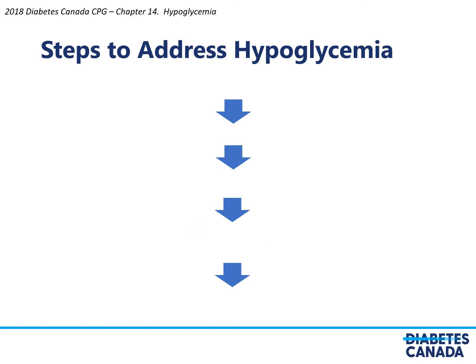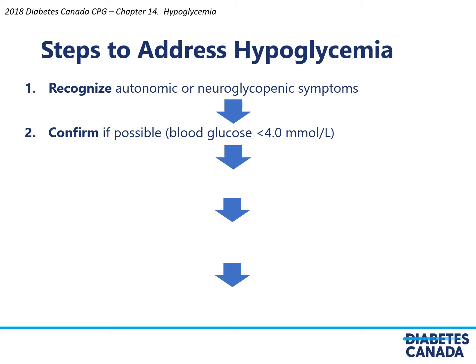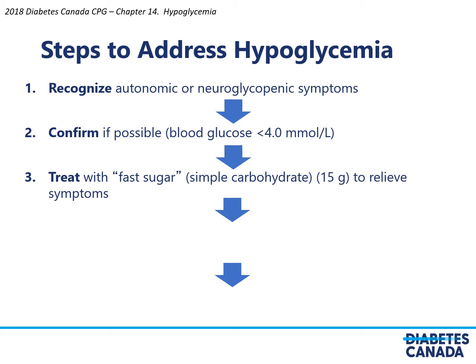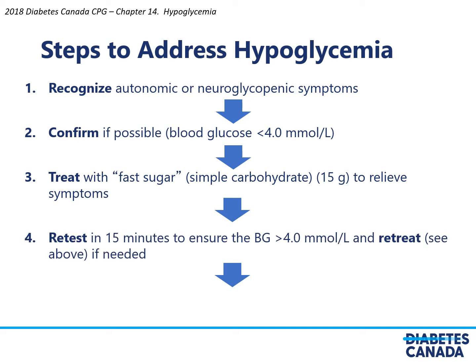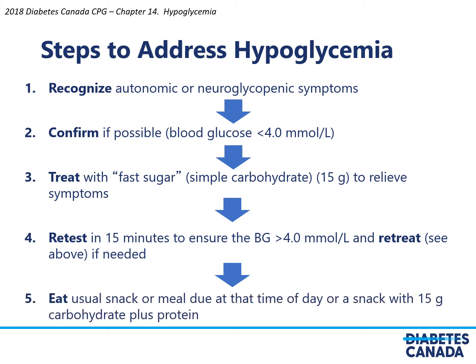When addressing hypoglycemia, step one is recognizing the autonomic or neuroglycopenic symptoms, then confirming the presence of hypoglycemia with a blood glucose less than 4. Treatment should take place with 15 grams of fast sugar or simple carbohydrates to relieve symptoms, followed by a retest in 15 minutes. Then eat a usual snack with physical carbohydrate plus protein. A personal addition would be step six: reflect on why it occurred and what changes can be made to prevent recurrence.